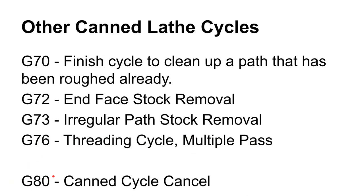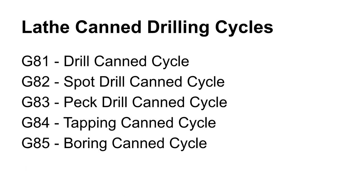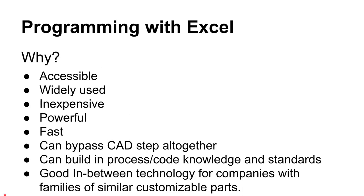G80 cancels the canned cycle. You'll often see G80 in the program header just to make sure no accidental move executes a canned cycle. These canned cycles work on both mills and lathes for many of the same reasons. That's the end of this topic — a separate video or series will cover programming with Excel.